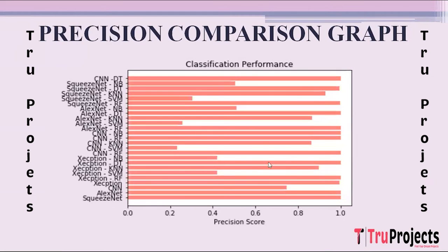This is the precision comparison graph. In this graph, the x-axis shows precision score and the y-axis shows algorithm names. Precision measures the accuracy of positive predictions, indicating how many predicted positives were actually correct.